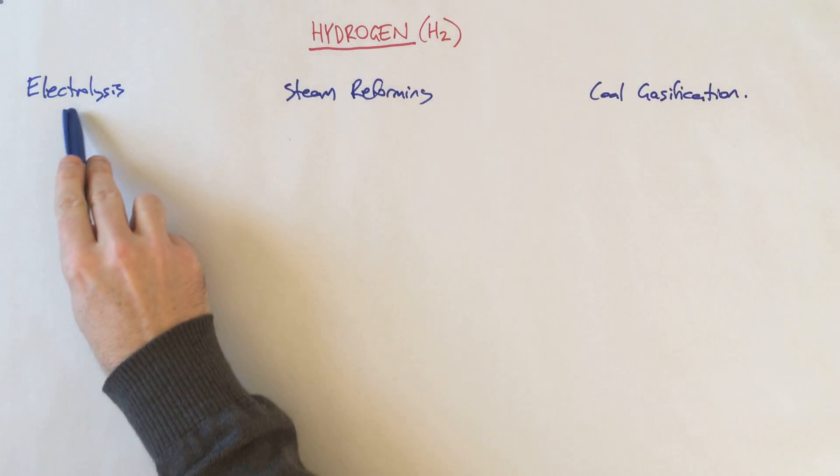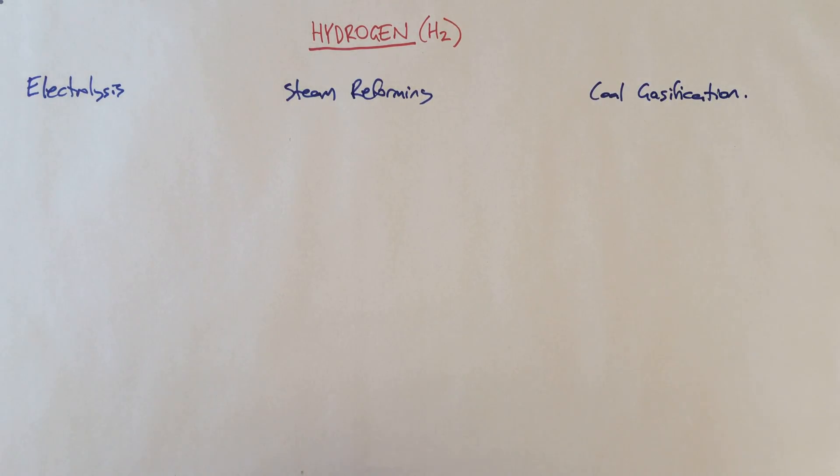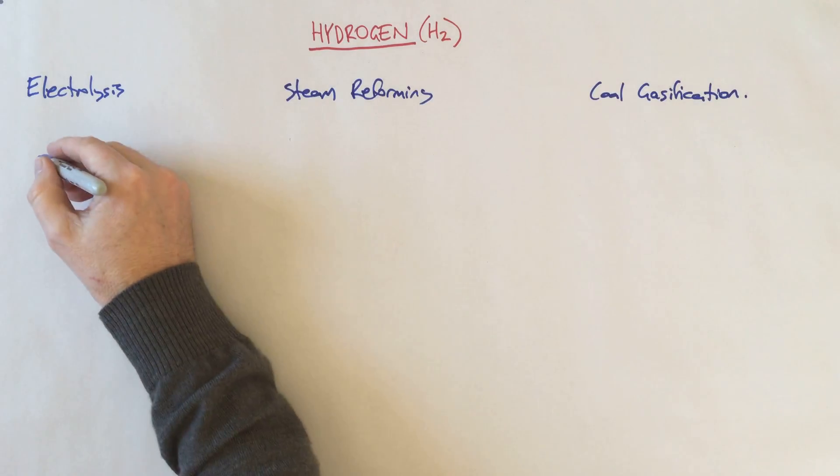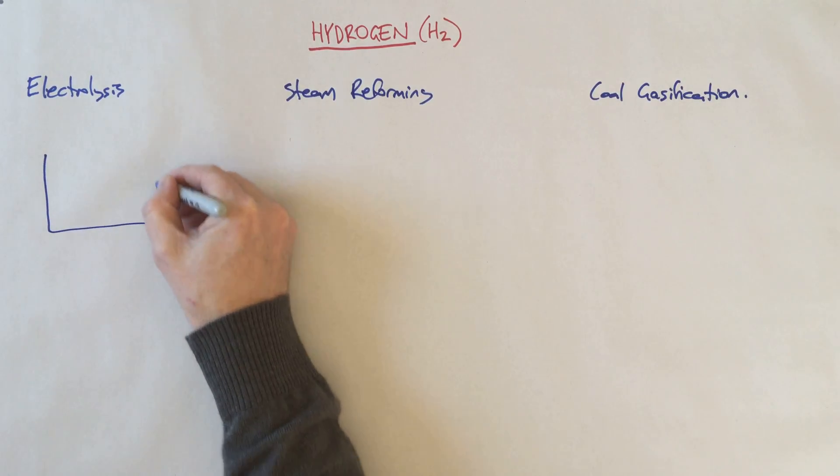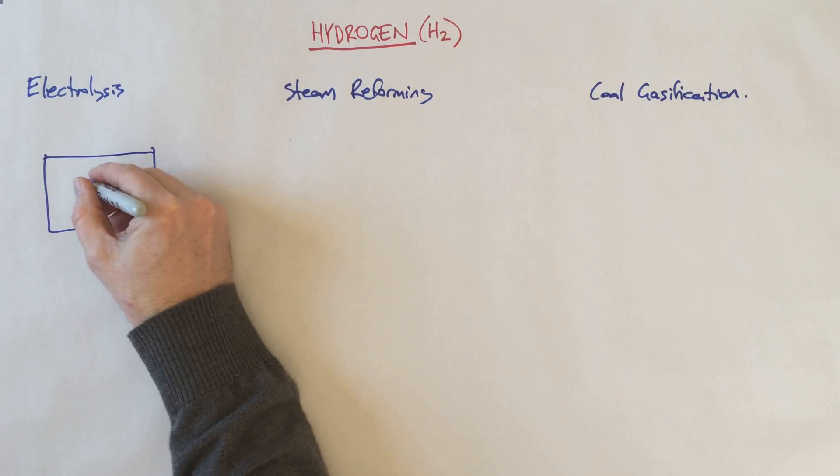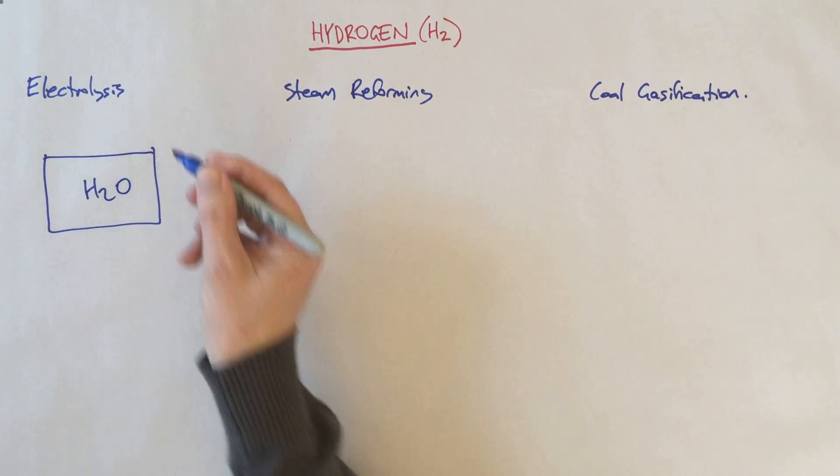Electrolysis, as the name suggests, is using electrical energy to take a substance we're all familiar with: water. Let's say we've got a container full of water. As we know, the makeup of water is H2O - two hydrogen atoms and an oxygen atom joined together.